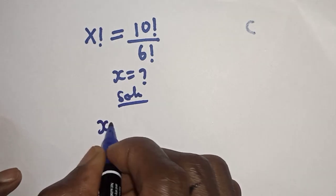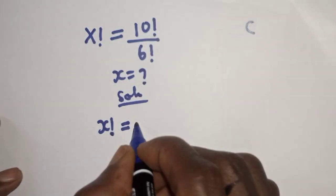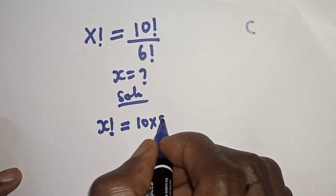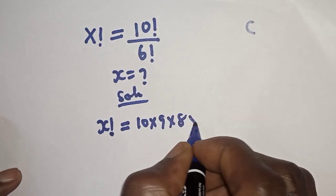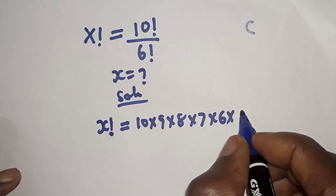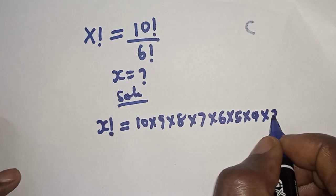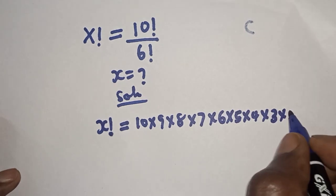x factorial is equal to 10 factorial over 6 factorial. 10 factorial can be written as 10 times 9 times 8 times 7 times 6 times 5 times 4 times 3 times 2 times 1.